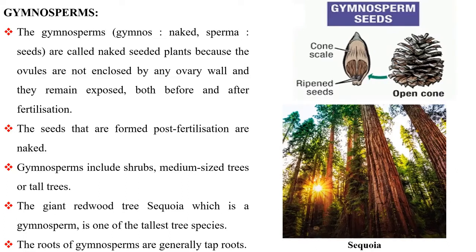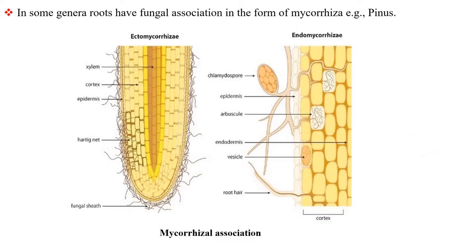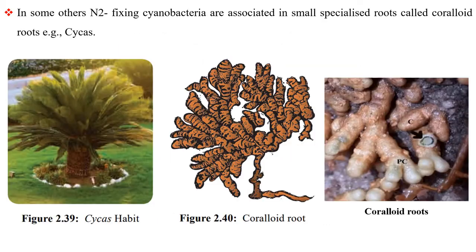The roots of gymnosperms are generally tap roots. In some genera, roots have fungal association in the form of mycorrhiza, for example pinus. In some others, nitrogen-fixing cyanobacteria are associated in small specialized roots called coralloid roots, for example cycas.